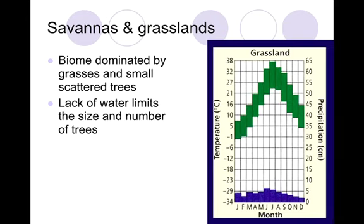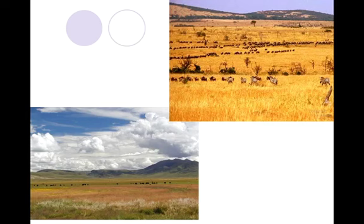Next are our savannas and grasslands. These are biomes dominated by grasses and small scattered trees. If you look at the climograph at the amount of precipitation in blue, you'll see there's not a lot of precipitation, and that's why the plant life there is grasses and small scattered trees. It doesn't have a lot of large trees or large numbers of plants because it does not have the water supply to support those.